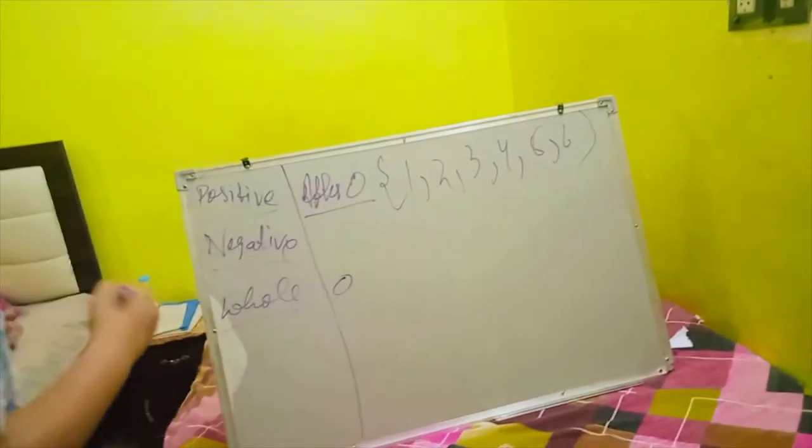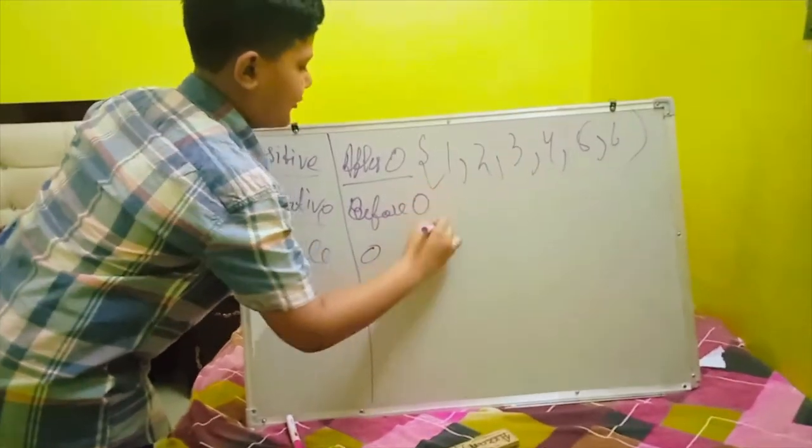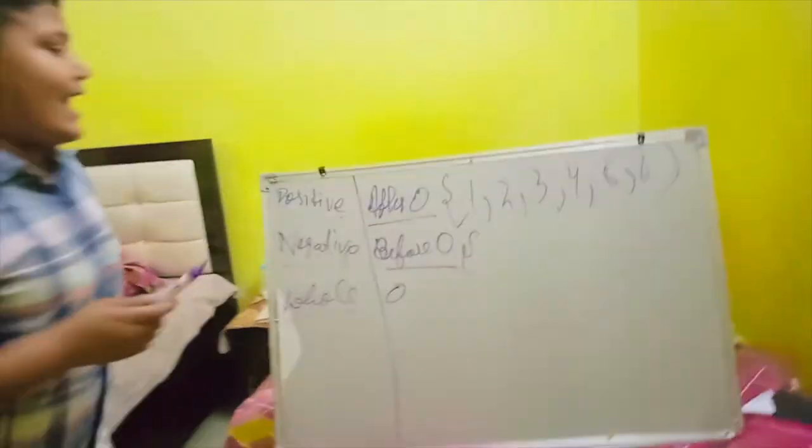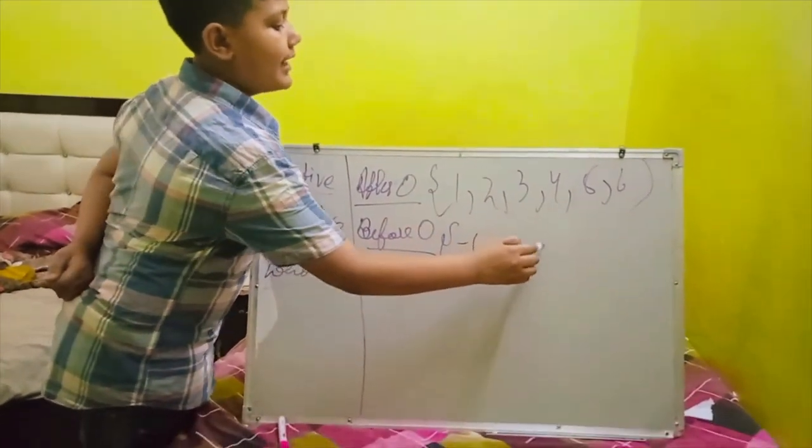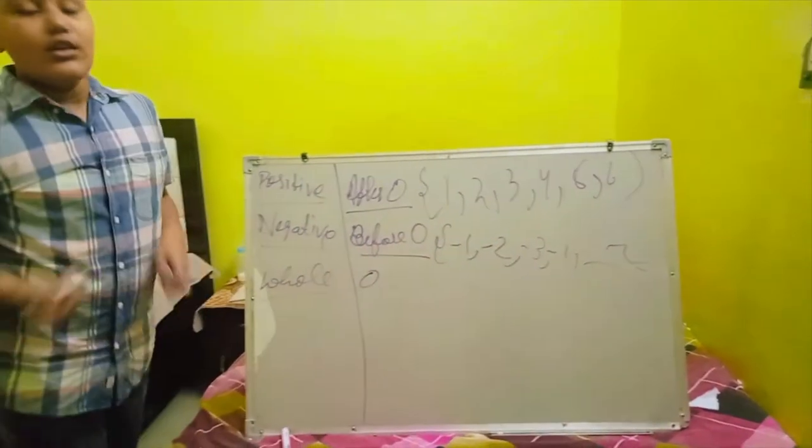For example we can say 1, 2, 3, 4, 5, 6 and so on. And in negative, the number before 0 that is in negative form: minus 1, minus 2, minus 3, minus 4 and so on.